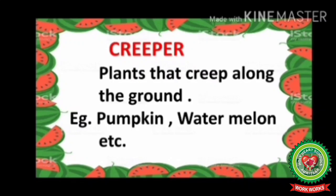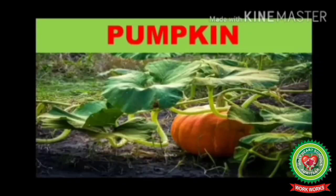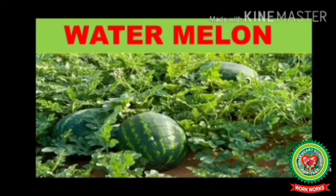Creepers are plants that creep along the ground. Children, creep means plants that grow along the ground. Example: pumpkin — see, pumpkin creeps on the ground. Watermelon is a heavy fruit, so it also creeps on the ground.